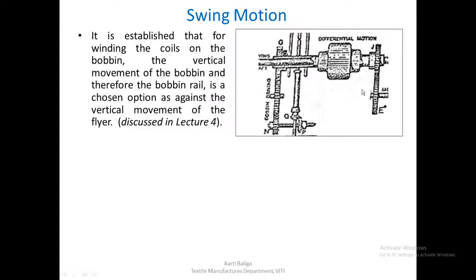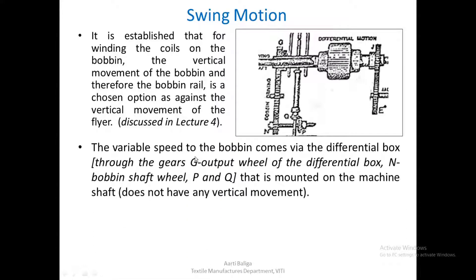Let us see the movement that is given to the bobbin once again. The speed comes from the cone drums through the differential motion, and this is the wheel G that will finally drive the bobbin shaft and then these two bubbles P and Q through which the bobbin is actually rotated. The variable speed to the bobbin comes via the differential box, which is mounted on the machine shaft, and this machine shaft does not have any vertical movement.